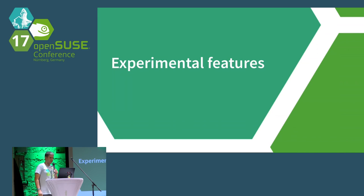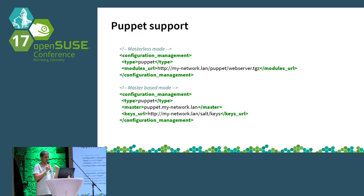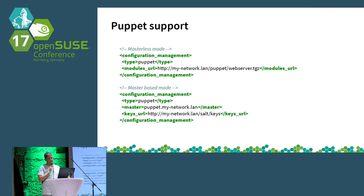I think the more interesting part is the experimental features. The first one is about Puppet — we support Puppet. When we started writing this module, we wanted to support more than one system, just to make sure it's flexible enough to add support for more tools if needed. Puppet support is not well-tested, so it may be buggy. It also doesn't have support for Hiera — Hiera is like pillars but for Puppet — and we don't support Hiera at this time.